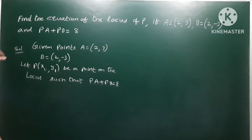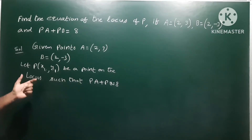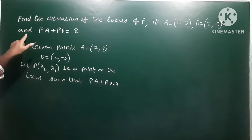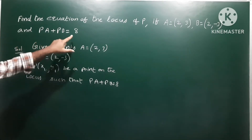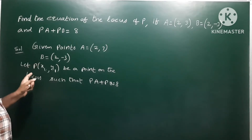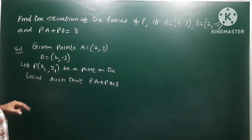A locus problem: find the equation of the locus of P if A is equal to (2, 3), B is equal to (2, -3), and the condition of locus is PA plus PB is equal to 8. Write given information — given points. Let P(x1, y1) be a point on the locus.